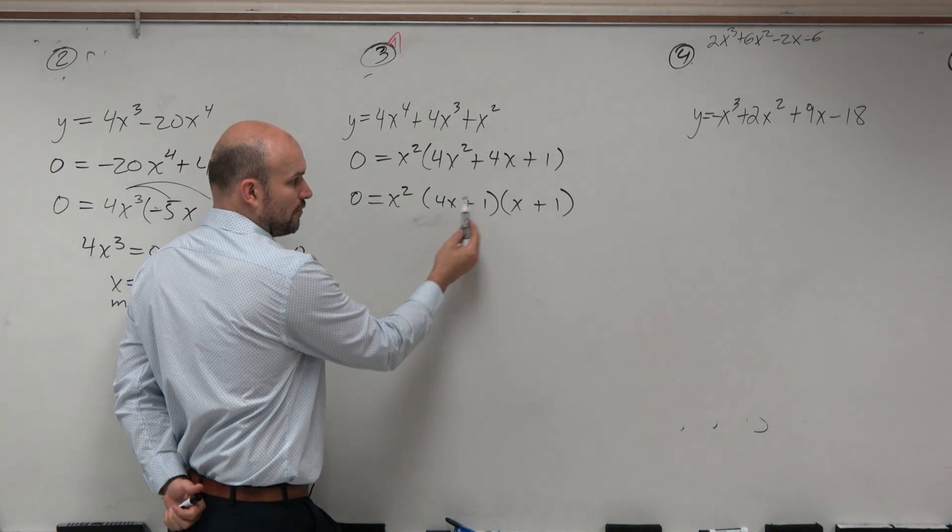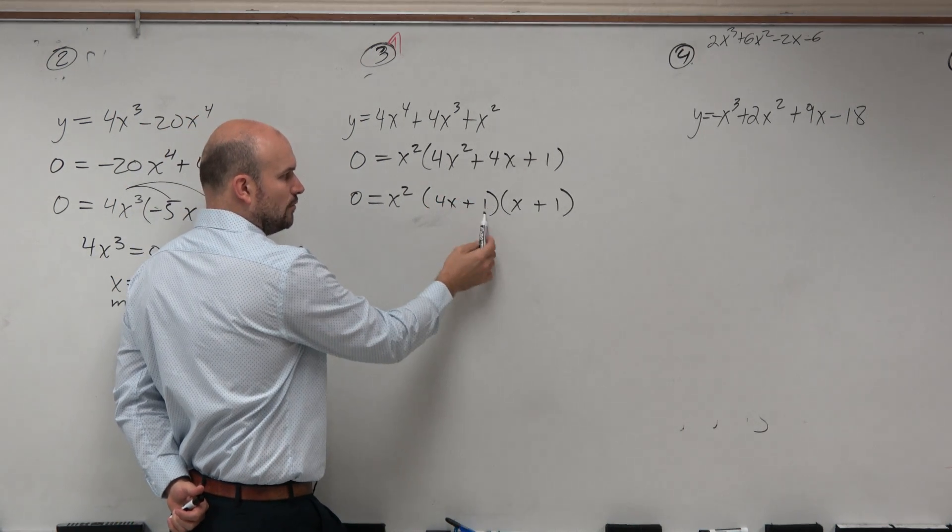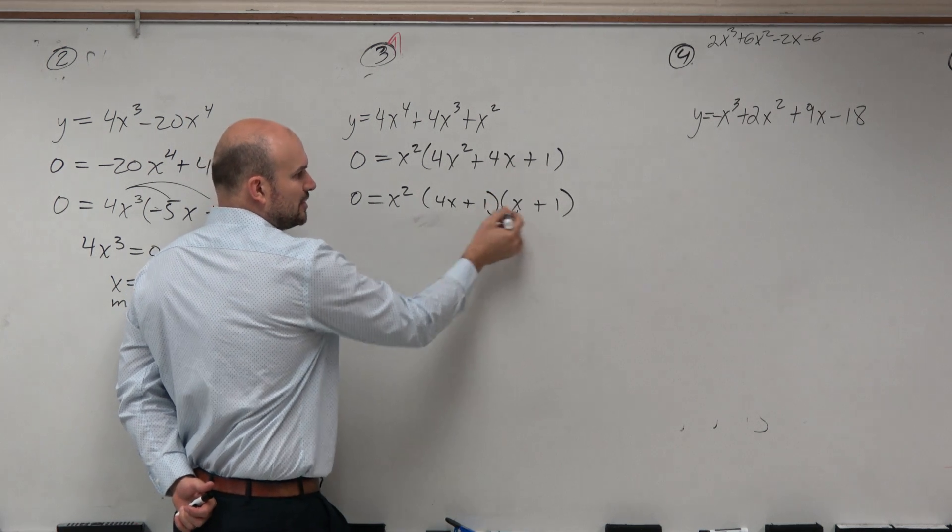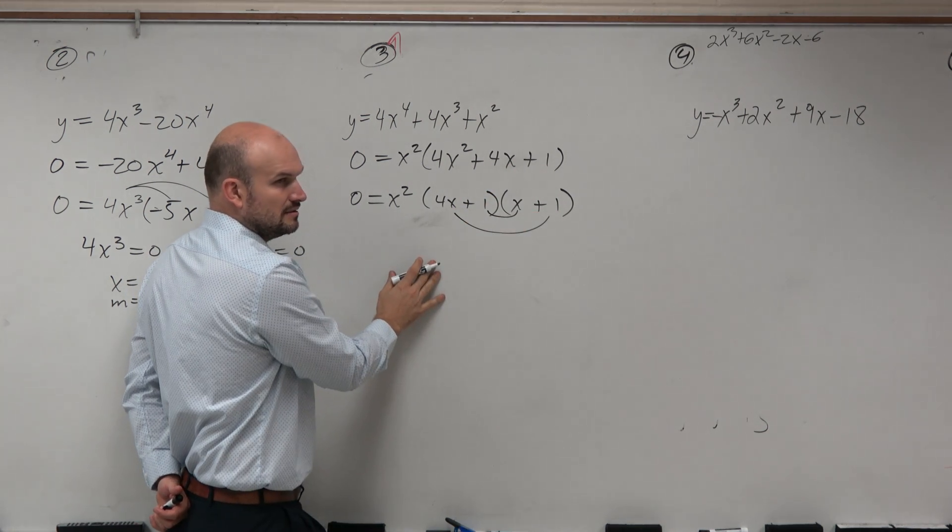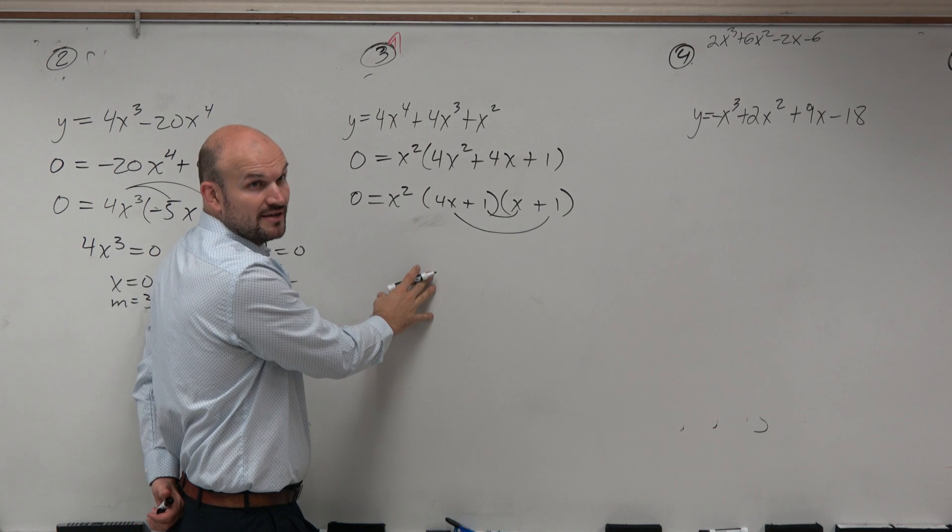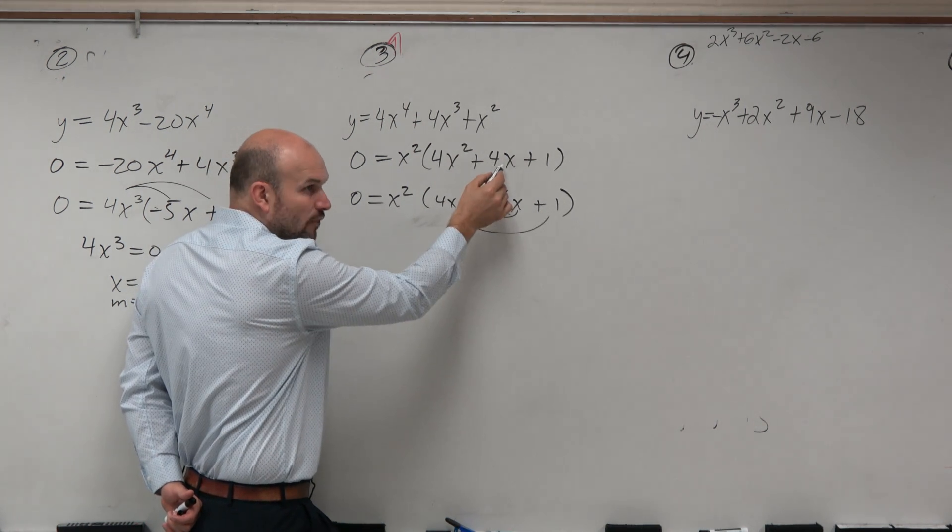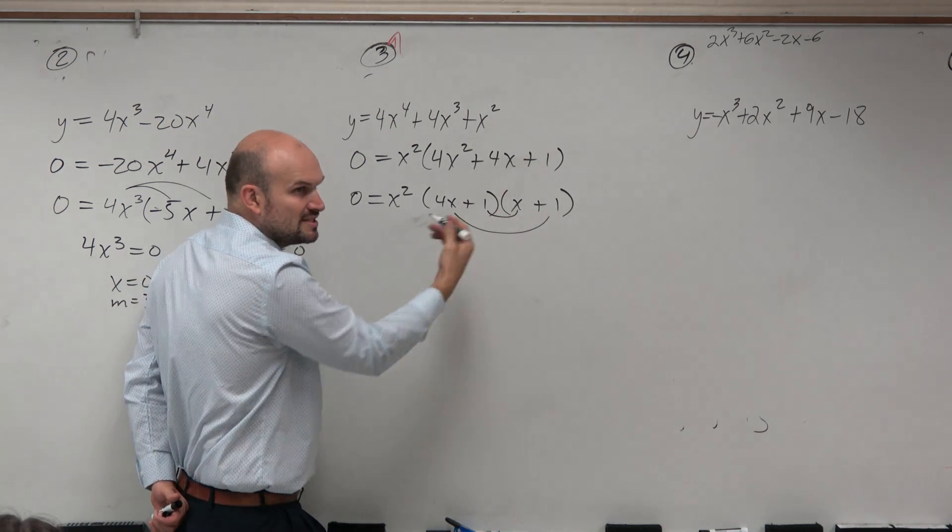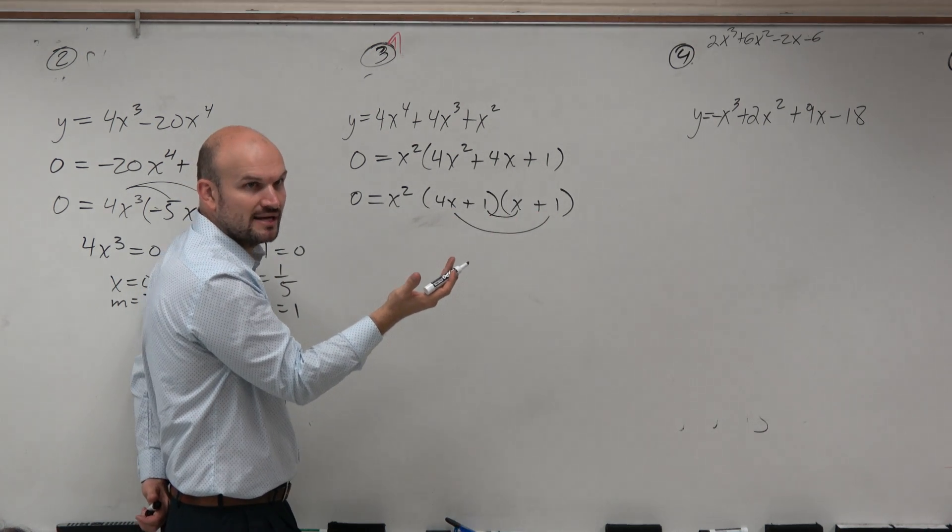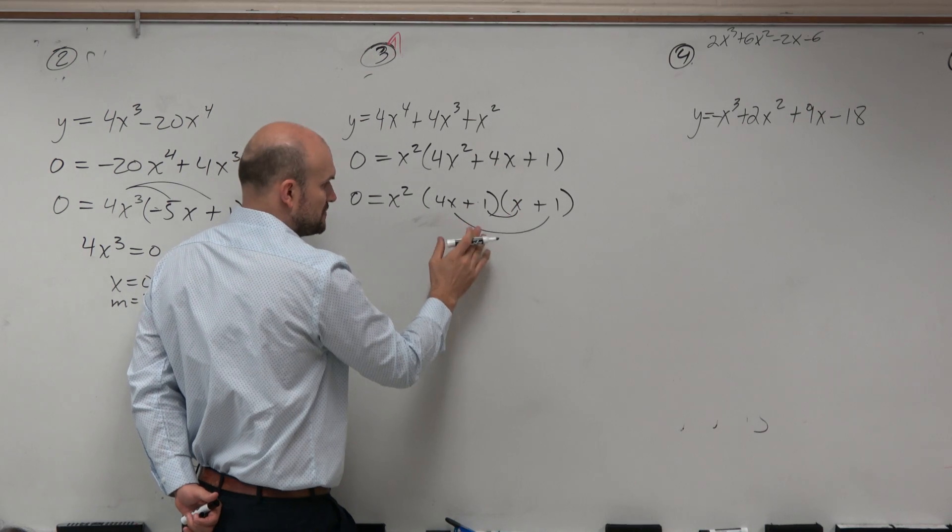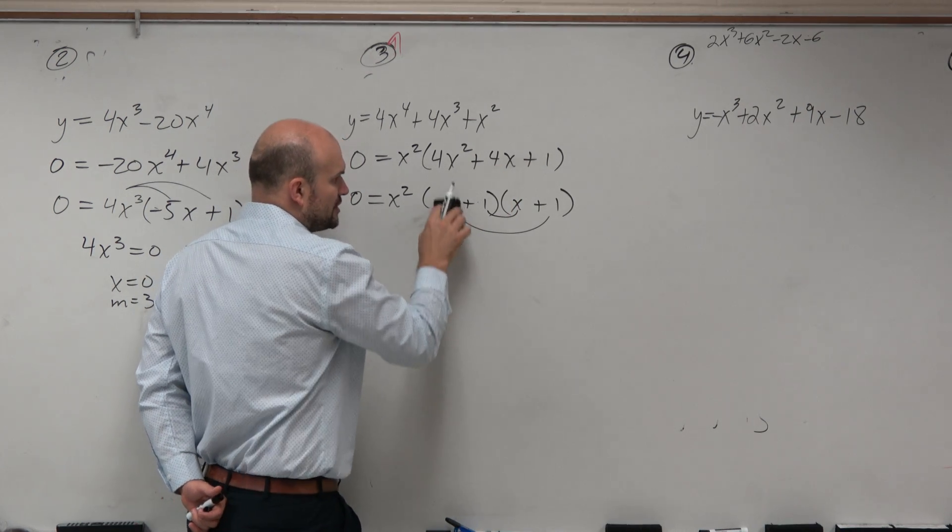So again, we agree that 4x times x has to give you 4x squared, 1 times 1 gives you 1. Good. Do the middle terms add to give us 4x? No, they add to give us 5x, right? So 1 times x and then 4x plus 1, that gives you 5x. We need 4x. So you would agree with me, even making these negative ones is not going to make it correct, right? Because negative 1 times negative 1 is 1. So that means I need to figure out some new terms.